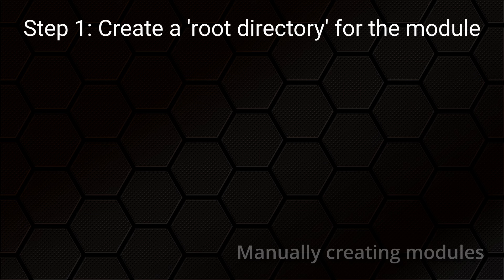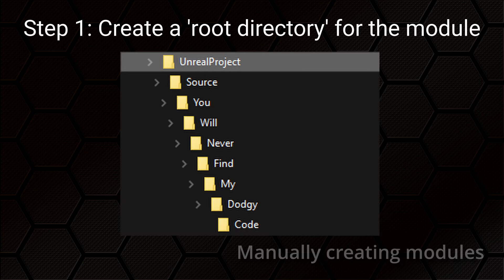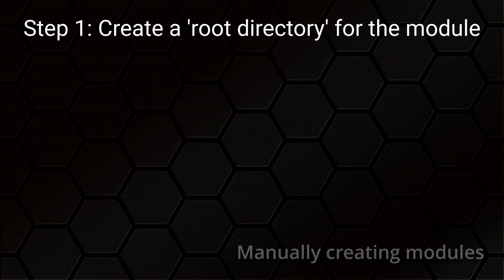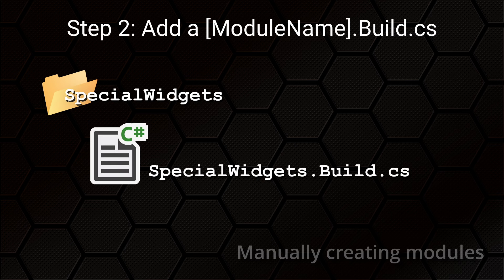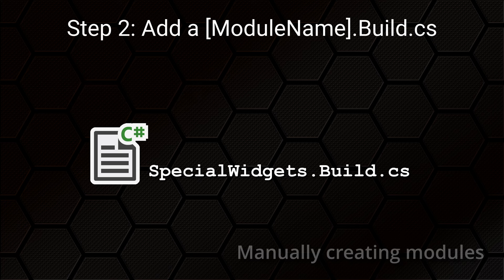I'll go back over this later when we look at making plugins. Modules can be placed in subdirectories nested as deep as you like if you want to structure things using folders to group certain modules together — though a couple of levels deep is probably best and you probably shouldn't go crazy. In the module's root directory, make a file with the same name as the module adding '.build.cs' to the end — so: YourModuleName.build.cs. The contents of that file define the dependencies this module has on other modules and how Unreal works out what to do with your module when your project is built.